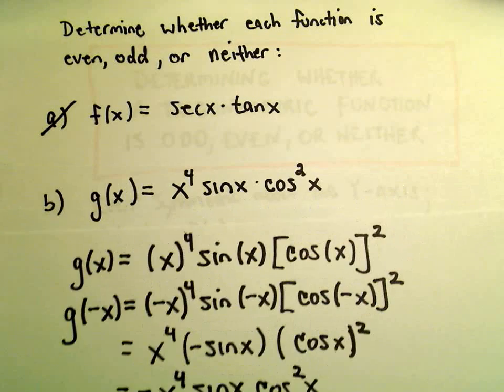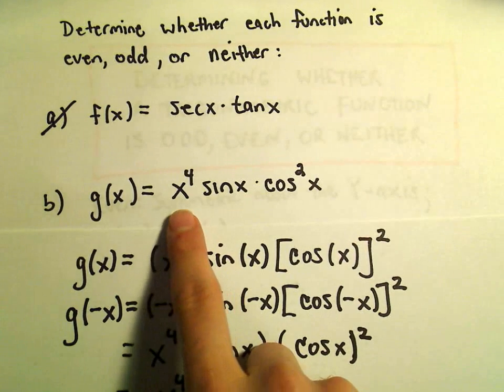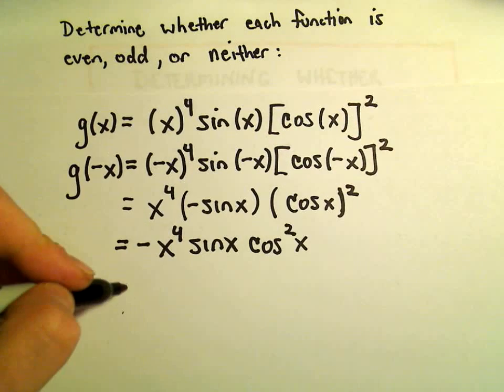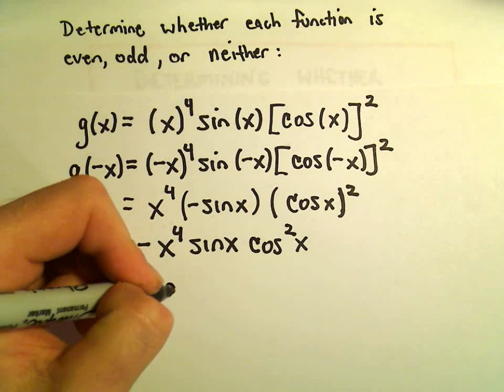And now, let's see, the original function we started with was x to the fourth sine x cosine squared. Well, that just means we have the negative of that.